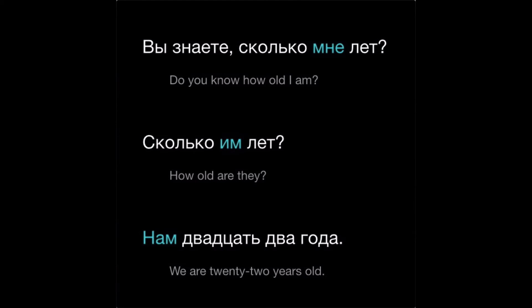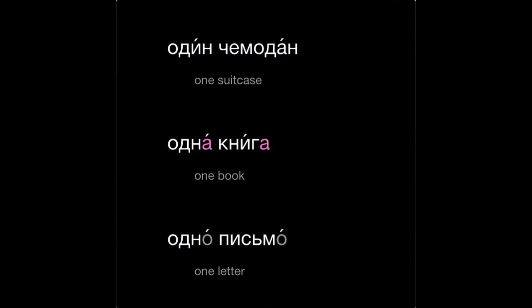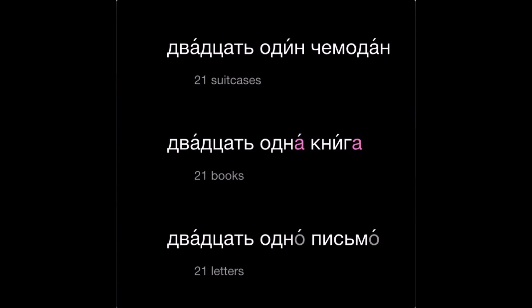Here's one other important thing to keep in mind. Since our answer will involve a number, the form of the word year will of course depend on which number we use. We use the nominative singular form of a noun after any number that ends in один, одна, or одно — even if it's a compound, like двадцать один or сто один.